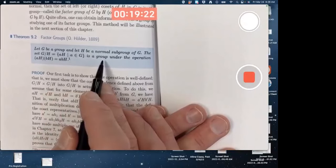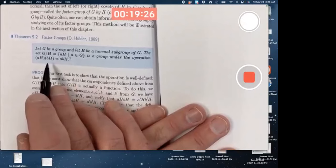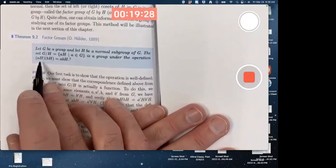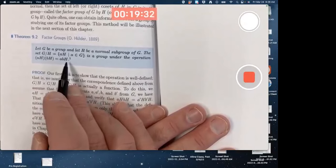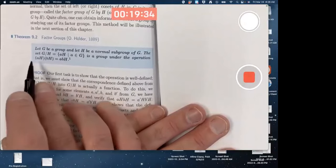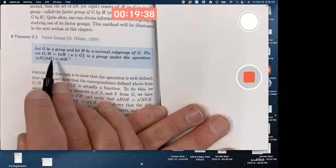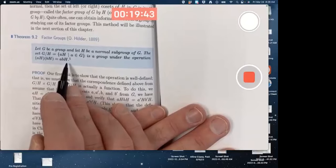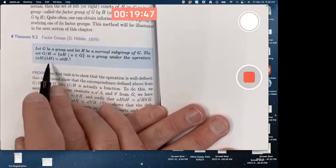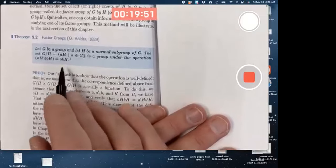This is a group. What's the operation? Coset multiplication. How do you do it? AH times BH is ABH. Or more wordily, the left coset of H and G containing A times the left coset of H and G containing B is the left coset of H and G containing A times B. You multiply the cosets by multiplying their representatives.